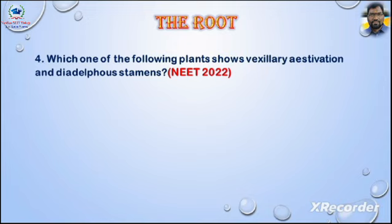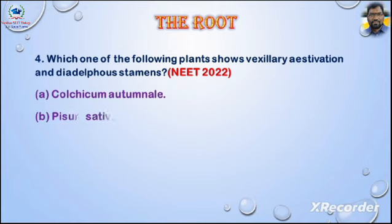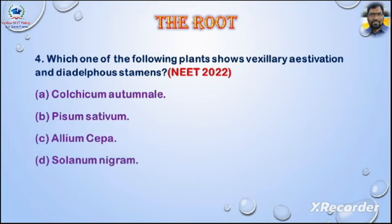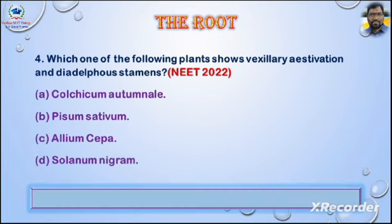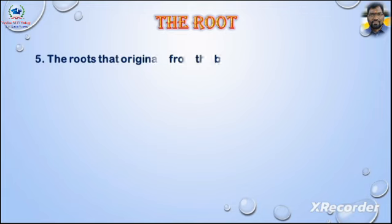Question 4: Which one of the following plants shows vexillary aestivation and diadelphous stamens? Asked in NEET 2022. Options: A) Colchicum autumnale, B) Pisum sativum, C) Allium cepa, D) Solanum nigrum. Answer: Option B — Pisum sativum.